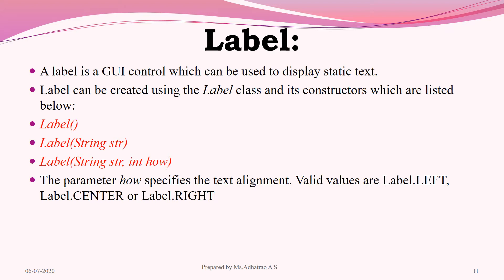Our first control is Label. A label is a GUI control which can be used to display static text. Label can be created using the Label class and its constructors. There are three constructors: first, the empty constructor; second, a parameterized constructor passing a string as the label; and third, a constructor taking a string with an integer 'how' that specifies the text alignment. The valid values are Label.LEFT, Label.CENTER, or Label.RIGHT.